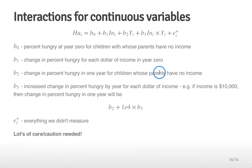The key takeaway is that you can include interactions with continuous variables in multiple regression, but a lot of care and caution is needed. You have to be very careful about putting together the interpretation of those coefficients.